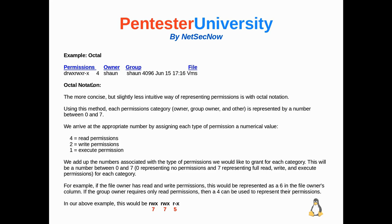Using our previous example, octal notation is the more concise but slightly less intuitive way of representing permissions. Using this method, each permission category — owner, group, and other — is represented by a number between 0 and 7. We arrive at the appropriate number by assigning each type of permission a numerical value: 4 equals read permissions, 2 equals write permissions, and 1 equals execute permissions. We add up the numbers for the permissions we want to grant. 0 represents absolutely no permissions, and 7 represents full read, write, and execute permissions.